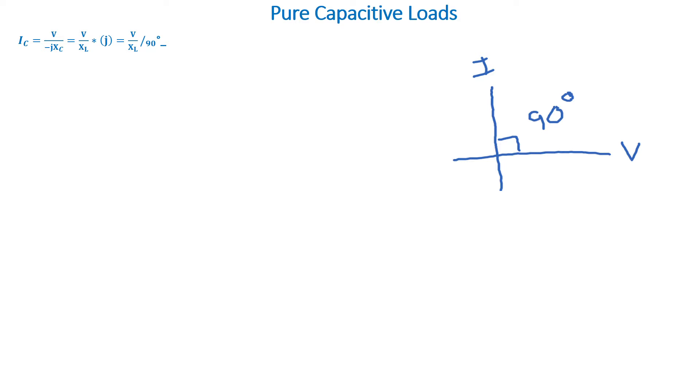J is nothing else but an angle of 90 degrees. So this equation tells us that the current leads the voltage by 90 degrees.